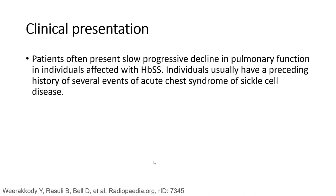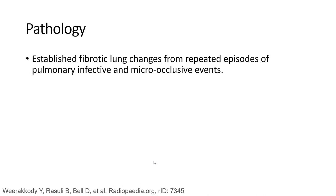Regarding clinical presentation, patients often present with a slowly progressive decline in pulmonary function. Individuals usually have a preceding history of several events of acute chest syndrome. The pathology involves established fibrotic lung changes from repeated episodes of pulmonary infective and micro-occlusive events.